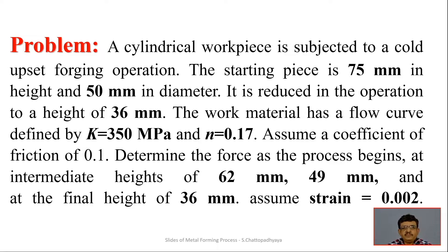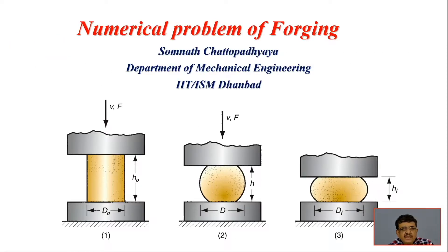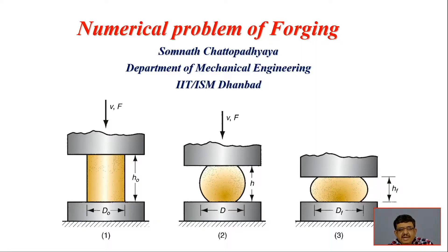The problem involves a cylindrical workpiece — a typical case of open die forging. In open die forging, the other part of the die is not closed, so it can have different kinds of bulging and barreling under pressure. D suffix zero is the initial or original diameter, H suffix zero is the original height, V is the velocity of the applied force, and F is the force. The lower die is static and the upper die is the moving one.